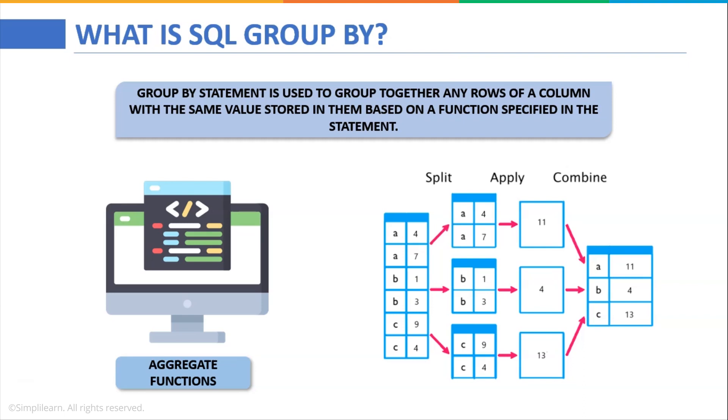Now when we split this and apply the sum aggregate function which results in the arithmetic sum of all these row values, as you can see now A has values 4 and 7. Now when I apply the sum it becomes 11